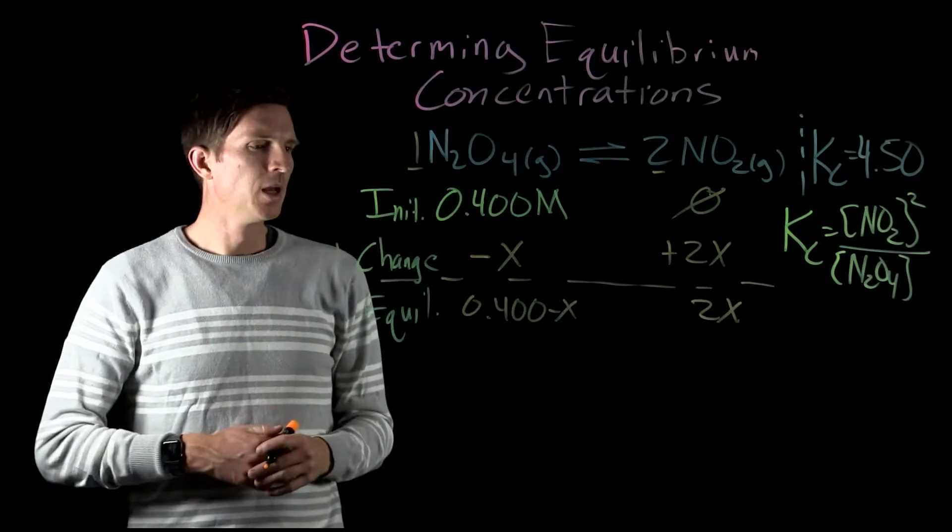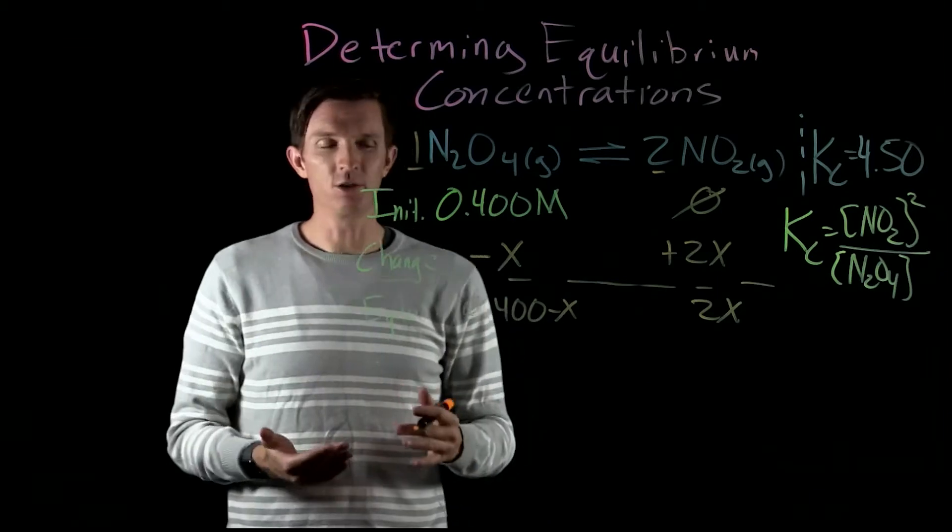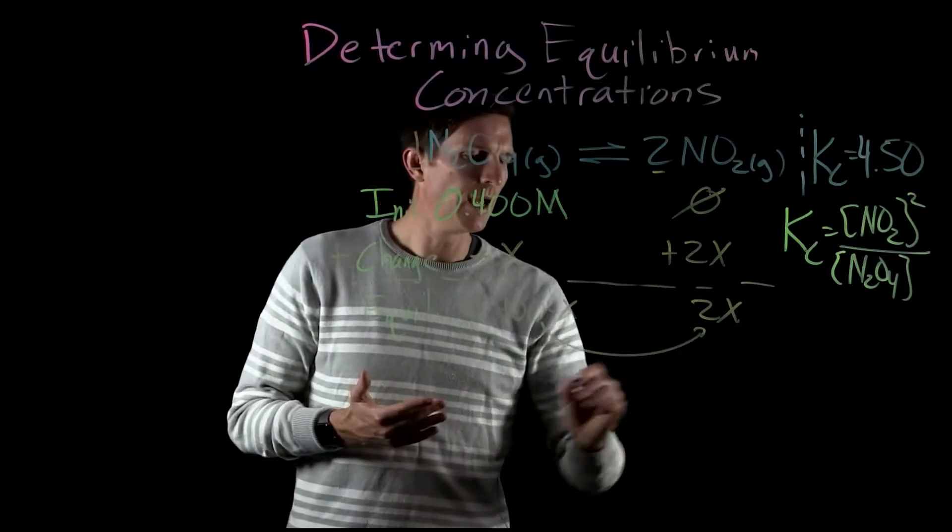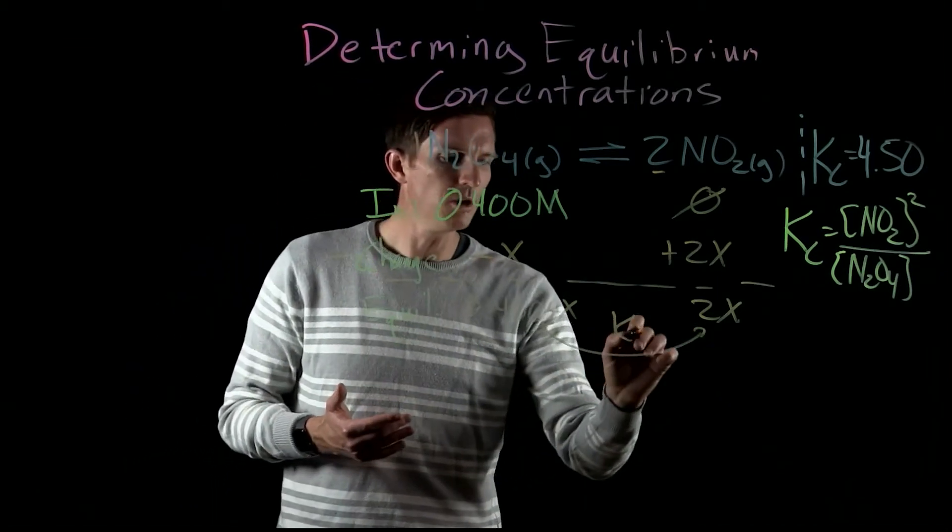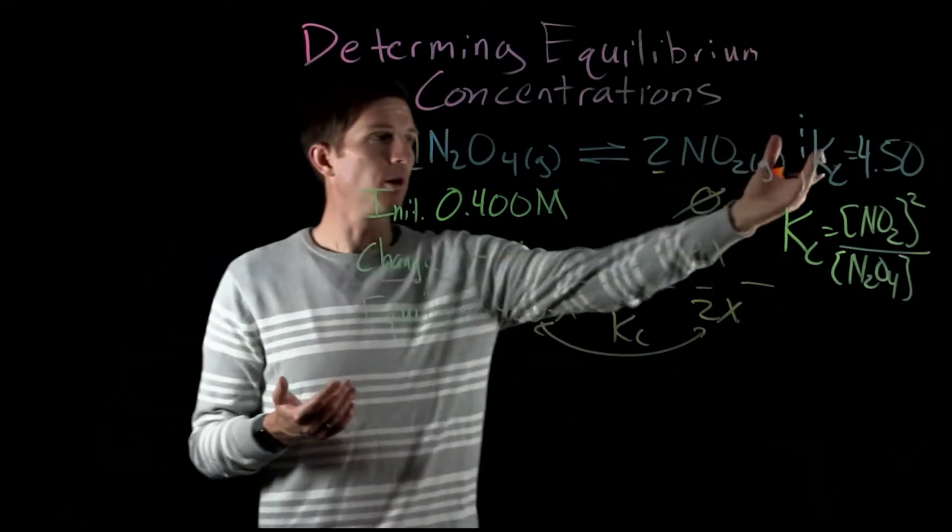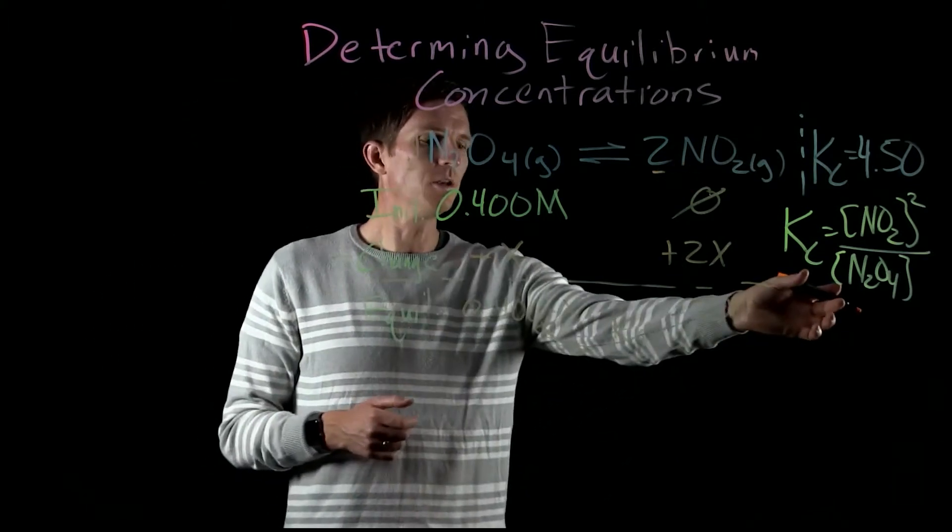Okay, so now we have an expression for our equilibrium concentrations, and we know since these are at equilibrium, we know that the ratio between those two is equal to our Kc value.